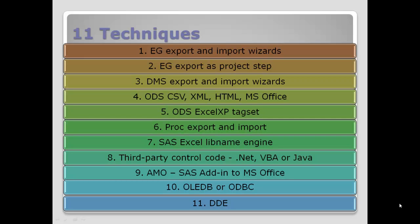The first technique is using SAS Enterprise Guide wizards. The second is using an Enterprise Guide export as a project step. The third is using Display Manager — the SAS windowing environment — and the export wizard within that. The fourth is using ODS, or Output Delivery System, and a range of different techniques to get information through to Excel. The fifth is using a specialized Excel XP tag set, which is designed for feeding information from SAS to Excel. The sixth is using PROC export, or its cousin PROC import, to bring information the other way around.